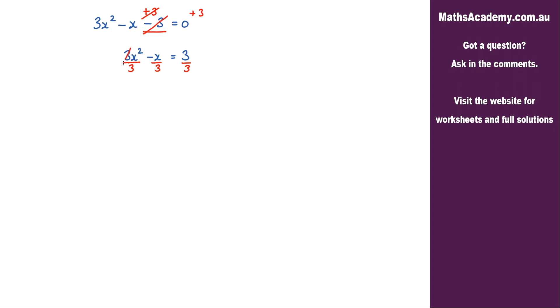These 3s will cancel, so what I'm left with is x² minus x over 3 is equal to 1, so 3 divided by 3 is 1.